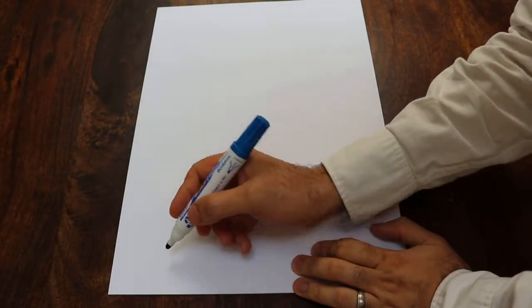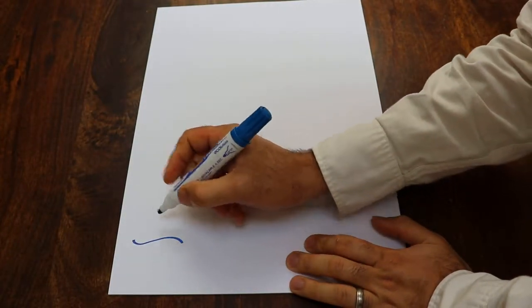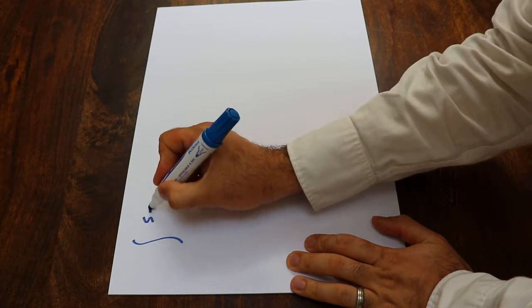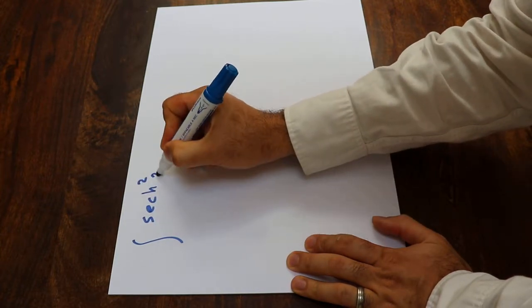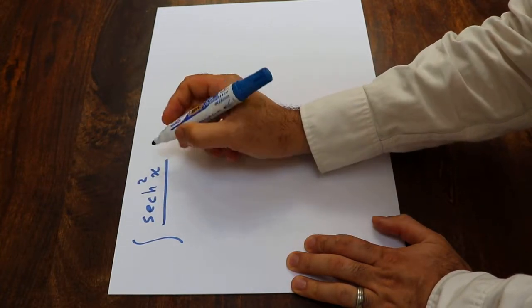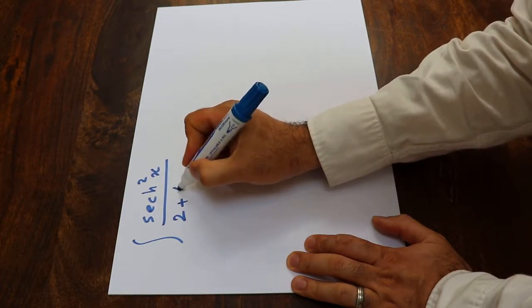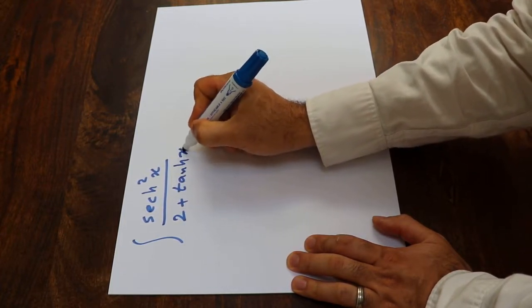Hello, today I'm going to show you how to calculate the integral of sech squared x divided by 2 plus hyperbolic tangent x dx.